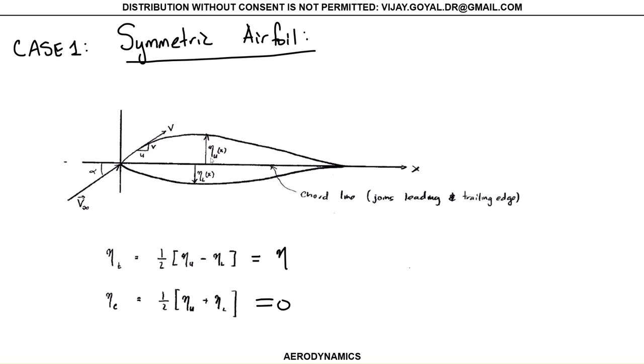Because it's symmetric, the upper surface equation and lower surface will actually be the same value eta. This is negative because the lower surface is in the negative axis, so it needs to have a negative sign.